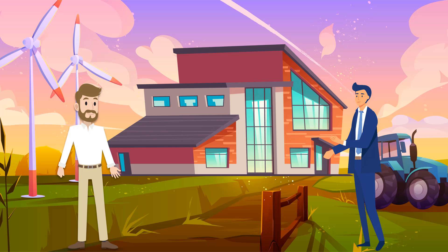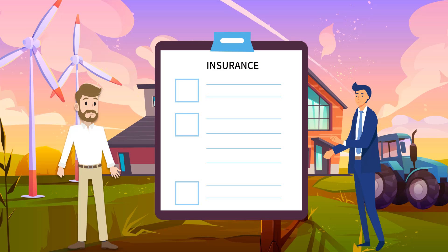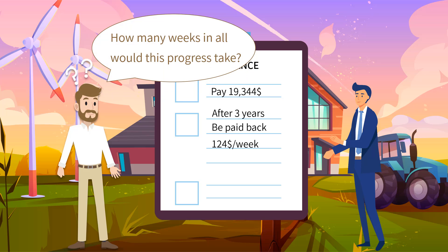He accepted the advice from an insurance agent and bought a flexible plan. He would pay $19,344 for one time, and hopefully, if no accidents happen, Uncle Josh would be paid back $124 each week, starting three years after. How many weeks in all would this process take?